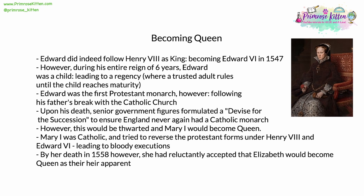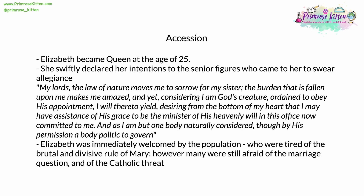Mary I, pictured here, became queen, and she was firmly Catholic. She immediately made efforts to reverse the Protestant reforms that had taken place across England under Henry VIII, to turn it into a Protestant rather than a Catholic nation. This led to numerous bloody executions, as people were burned alive or executed for their faith. By her death in 1558, she had reluctantly accepted that there was no other option — Elizabeth would become queen. She was the heir apparent and had the strongest claim as the direct descendant of Henry VIII. Elizabeth, therefore, became queen.